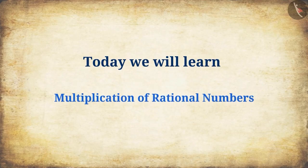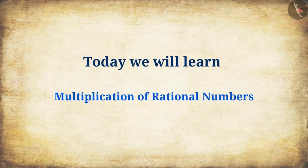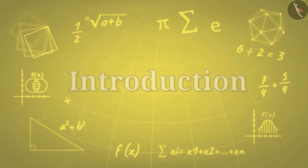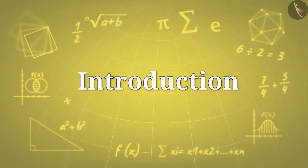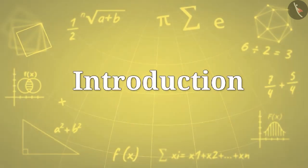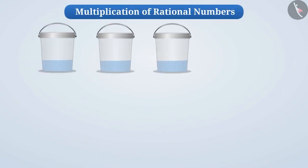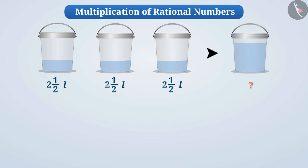Today, we will learn multiplication of rational numbers. Suppose we take three buckets and fill each bucket with two and a half litres of water. If we mix the water of all the buckets, to know how many litres of water we will have, we need to find the result of two and a half plus two and a half plus two and a half.